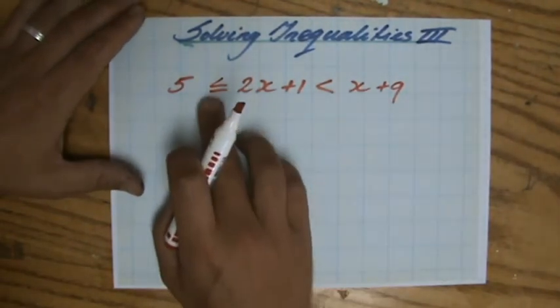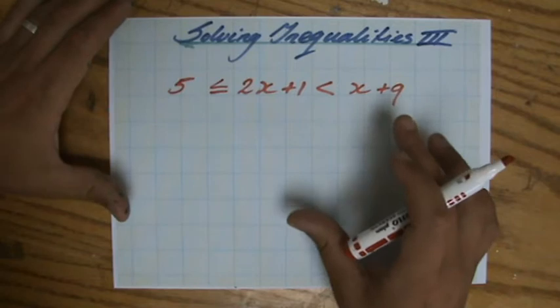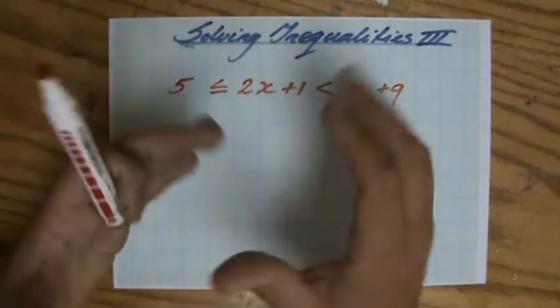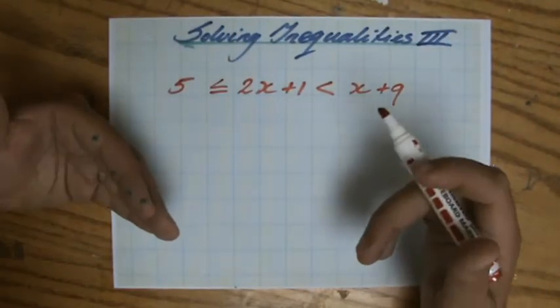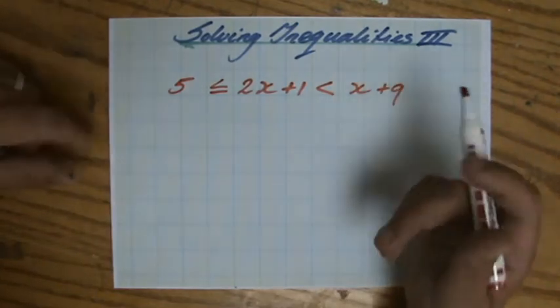5 smaller or equal to 2x plus 1, smaller than x plus 9. It looks a little bit intimidating, but it's not. You need to realize that these are actually two inequalities. Now there is a way to solve that just in one sentence, but I strongly discourage you to do that. I'm going to tell you, break it up into two inequalities.